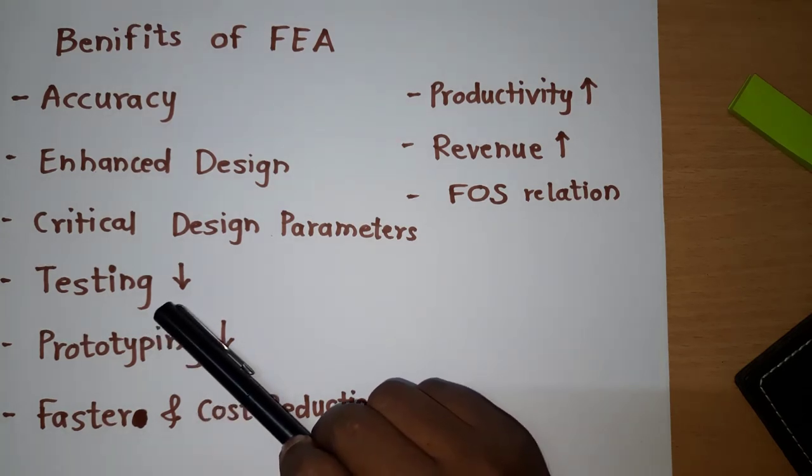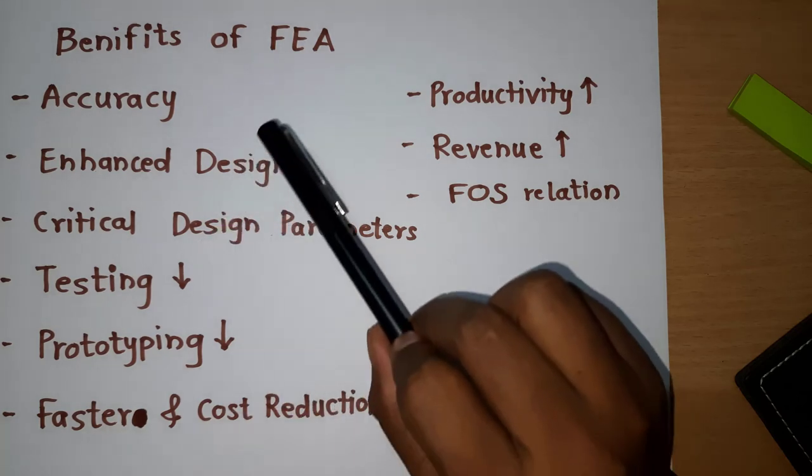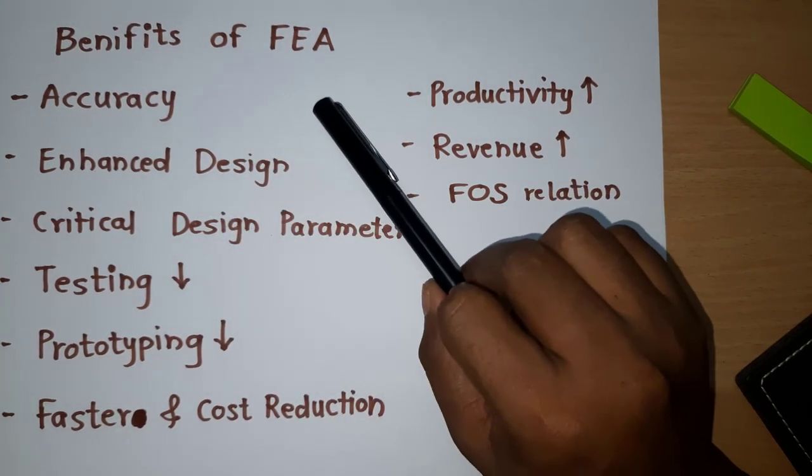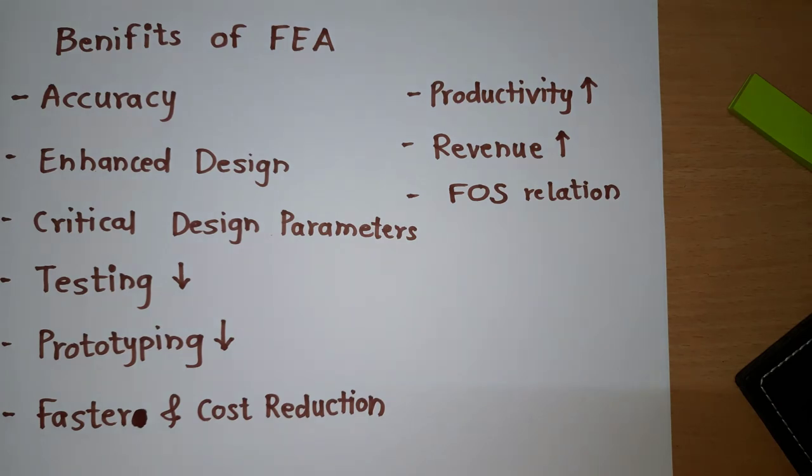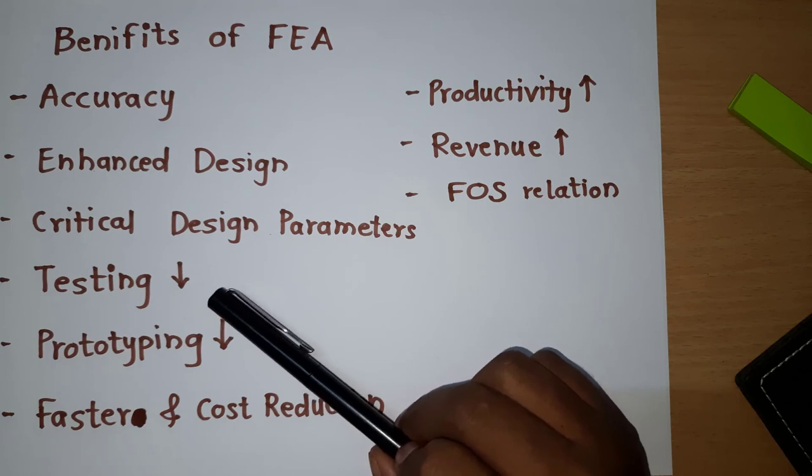Now testing. Earlier, the process was we have to do testing by creating one prototype and if it is failing, we will do some adjustment, create one more prototype and test again. Here, this is virtual analysis. What will happen? We will do the FEA. If it is not safe, then we will redesign virtually and again test it in the FEA. And finally, when it comes to safe design, then we will go for testing. So finite element analysis will not avoid the testing, but it will reduce the number of iterations required for the test.